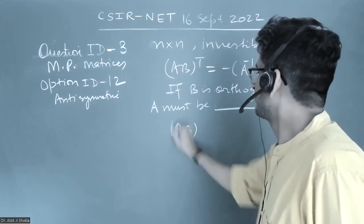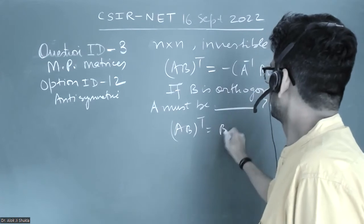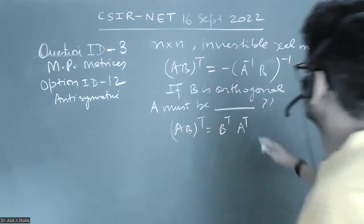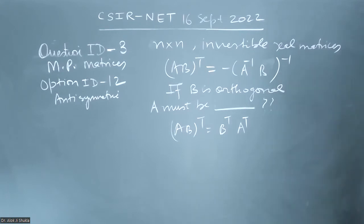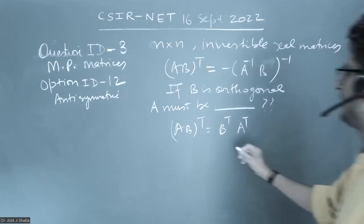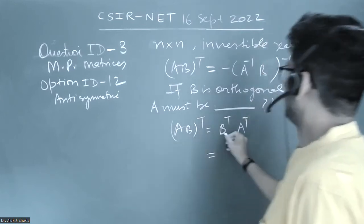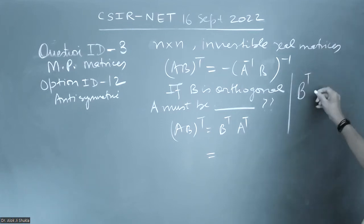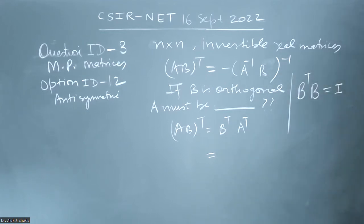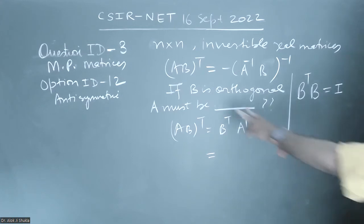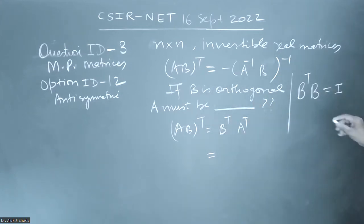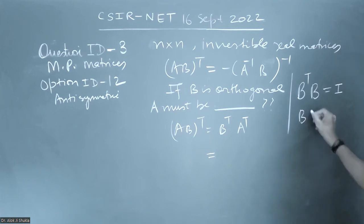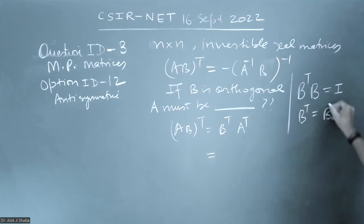We know that (AB)^T is equal to B^T times A^T, so let us apply the same rule here. It will become B^T. Now, B^T times B is equal to the identity matrix, because B is orthogonal. So B^T times B equals identity, which means B^T equals B inverse.